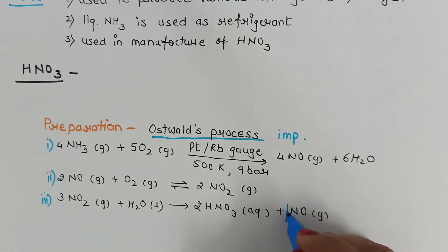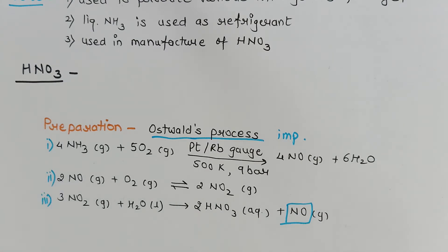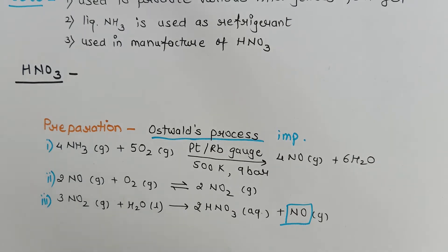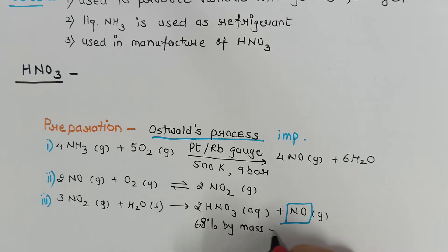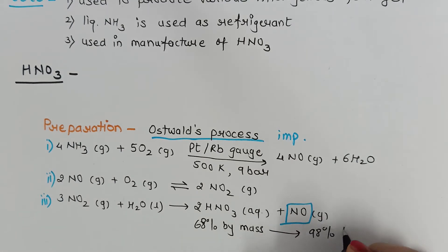Ostwald's process is considered important because in the third step, the byproduct nitric oxide can be reused in the second step. Industrial processes where byproducts can be recycled save resources. The nitric acid obtained is 68% by mass, which is then concentrated by dehydration using concentrated H2SO4 to give 98% HNO3.